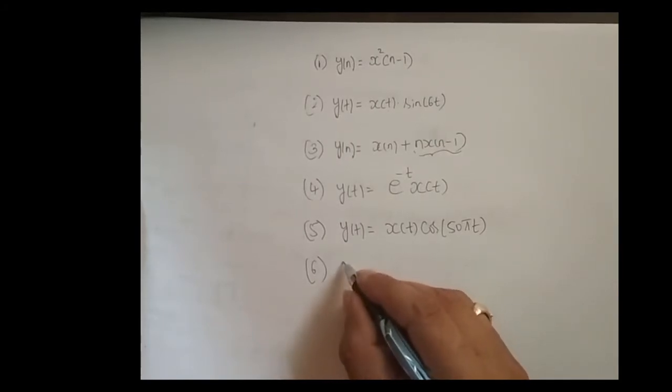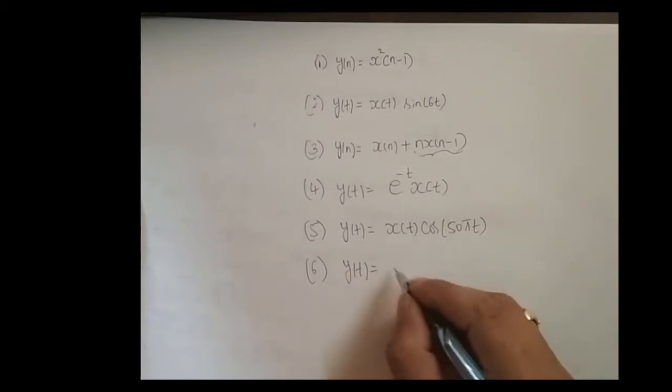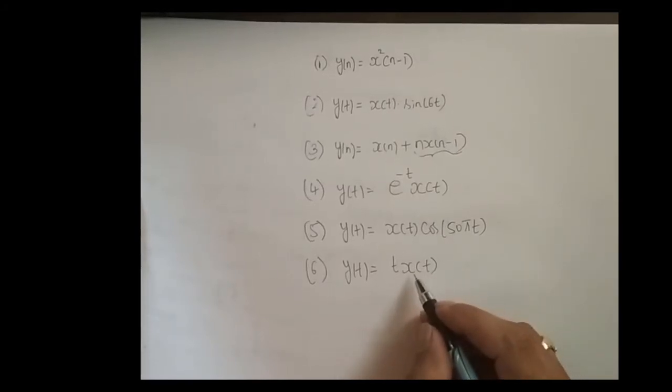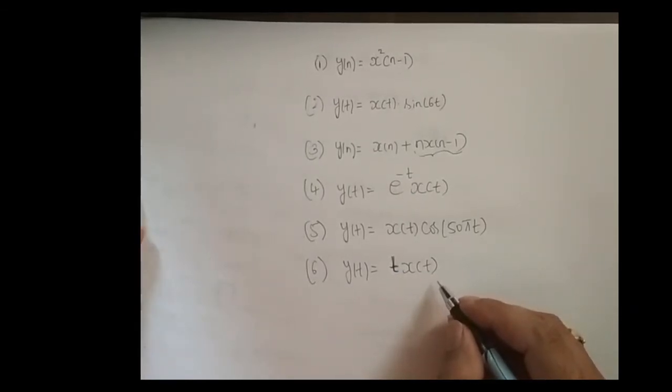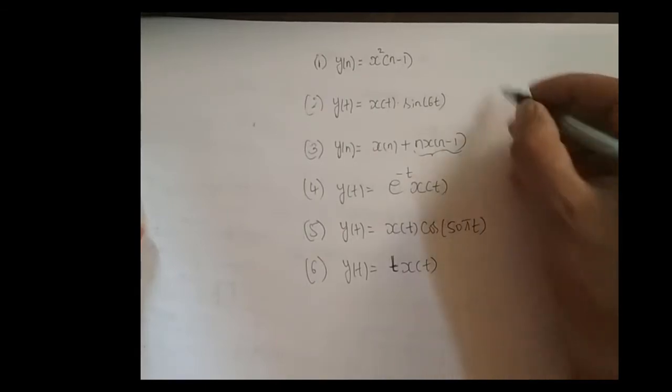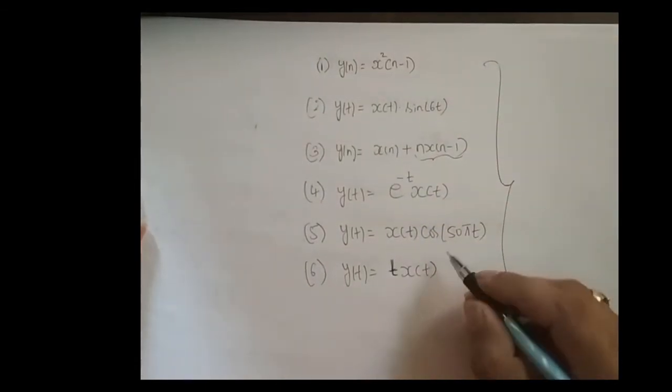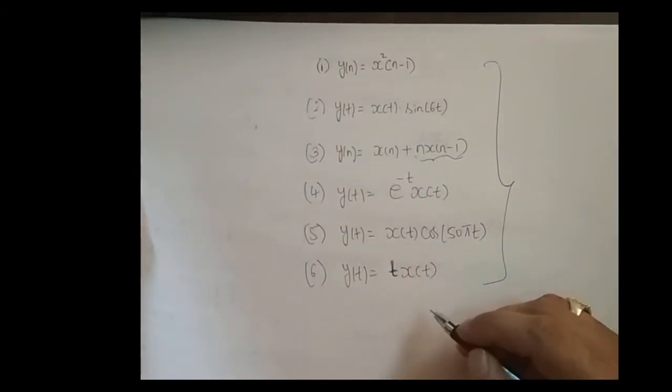One more signal: y(t) = tx(t). For the input signal x(t), unit ramp function t is getting multiplied. As a practice problem, you just try to check for linearity property of these systems.